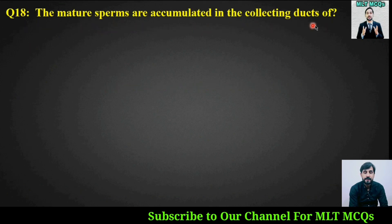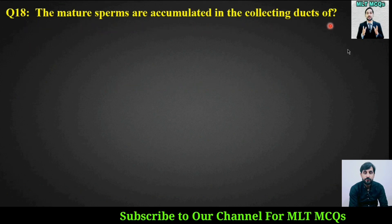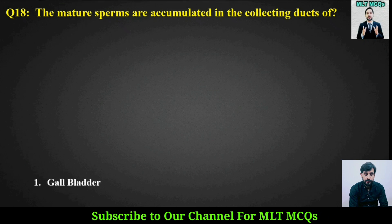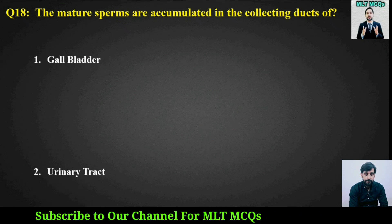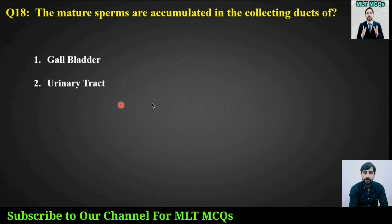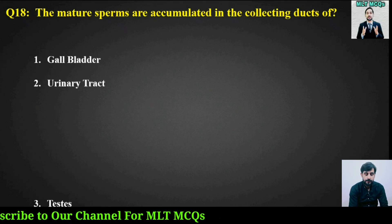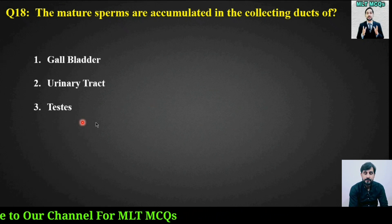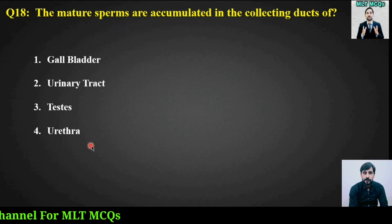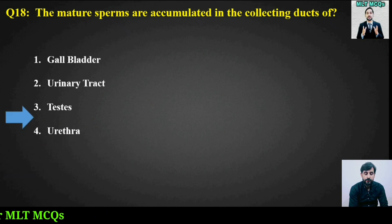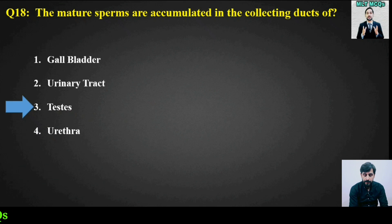MCQ number eighteen: Mature sperm are accumulated in the collecting ducts of which structure? Options are: gallbladder, urinary tract, testes, or urethra. The right answer is option number three — testes.